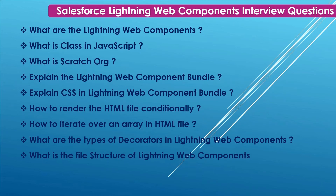When creating a Lightning Web Component, keep these naming rules in mind: the name cannot contain hyphens, must begin with a lowercase letter, cannot include whitespace, can contain only alphanumeric or underscore characters, cannot end with an underscore, must be unique in the namespace, and cannot contain two consecutive underscores.